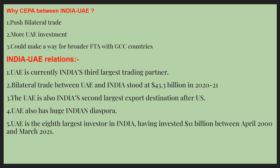The second reason is for more UAE investment in India's market. The third reason is it could make a way for a broader free trade agreement with GCC countries. UAE is a member of the GCC, which stands for Gulf Cooperation Council — a political and economic union of Arab states bordering the Gulf, established in 1981. It consists of six members: UAE, Saudi Arabia, Qatar, Oman, Kuwait, and Bahrain. If CEPA works, India will be able to make free trade agreements with other GCC countries as well.